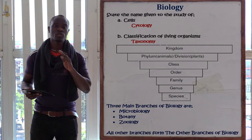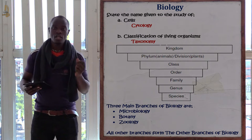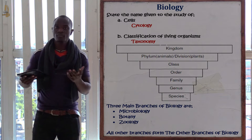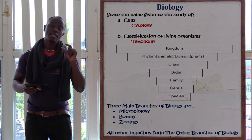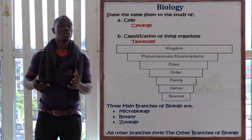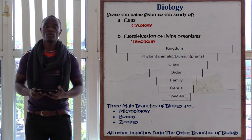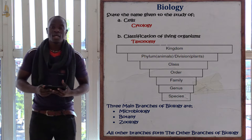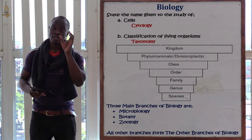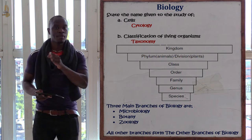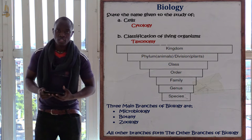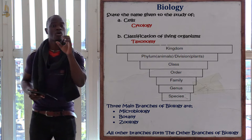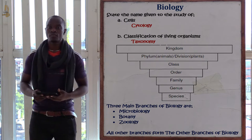If you only say kingdom, division, class, order — it means you have not put animals into consideration. If you only say kingdom, phylum — it means you have ignored plants. So when writing the hierarchy of classification, always write both: kingdom, phylum or division, meaning animals and plants, then continue. Make sure you have not made that mistake — it should be kingdom, phylum or division, then continue up to species.